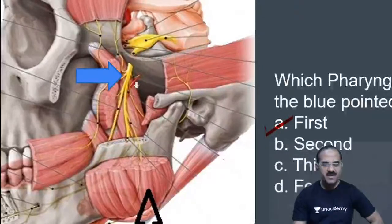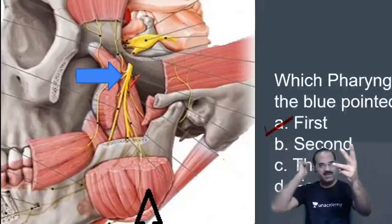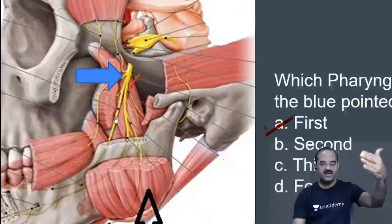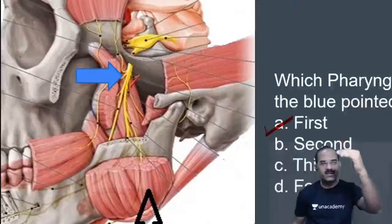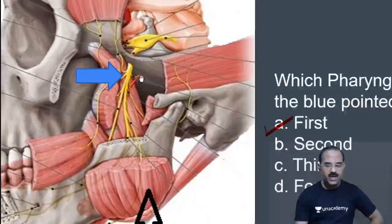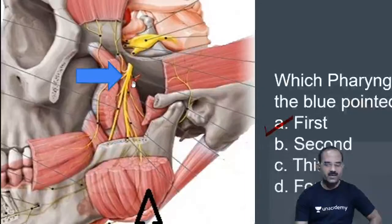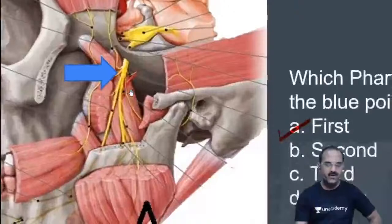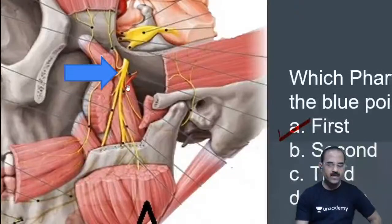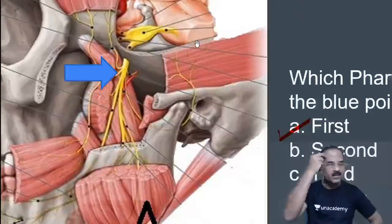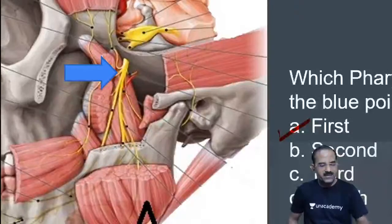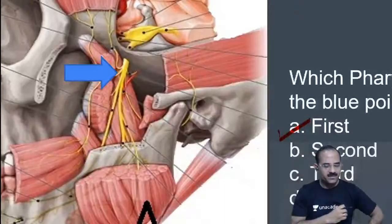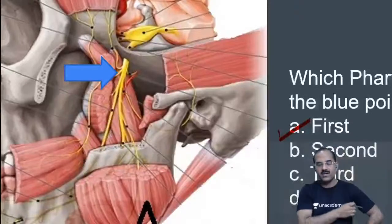There are three branches of the posterior division of mandibular nerve: lingual, inferior alveolar, and the third. The third nerve encloses an artery — the middle meningeal artery — with two roots, then goes up accompanying the superficial temporal artery. That is the auriculotemporal nerve. It arises as two roots enclosing the middle meningeal artery and travels with the superficial temporal artery.